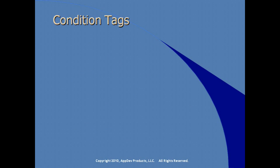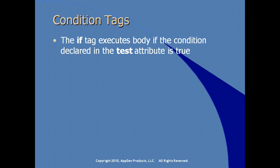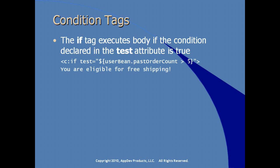One of the most elementary skills in building any script is evaluating and executing code based on a conditional test. We have in the core JSTL an if tag that executes the body of the element if the condition declared using the test attribute returns a boolean true. The opening tag uses the test attribute, evaluating if userBean.pastOrderCount is greater than five. In the body, we write out 'you are eligible for free shipping,' then close the if tag — creating a code block evaluated only if the test expression is true.